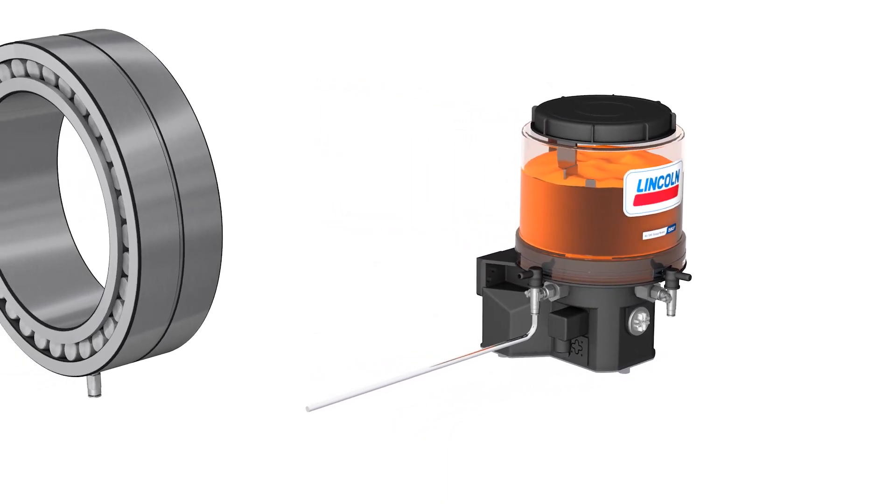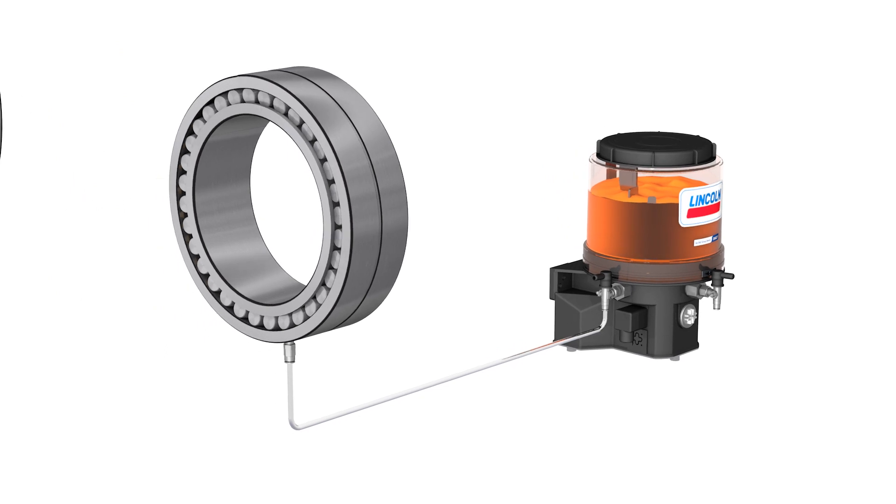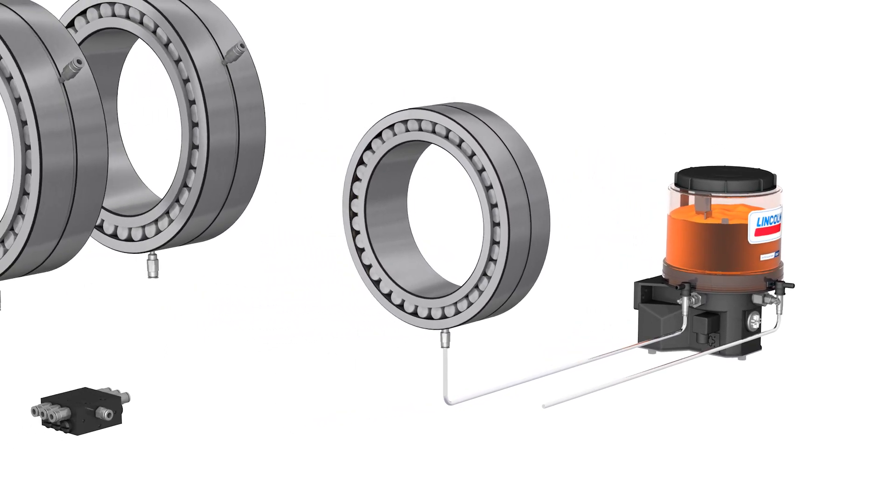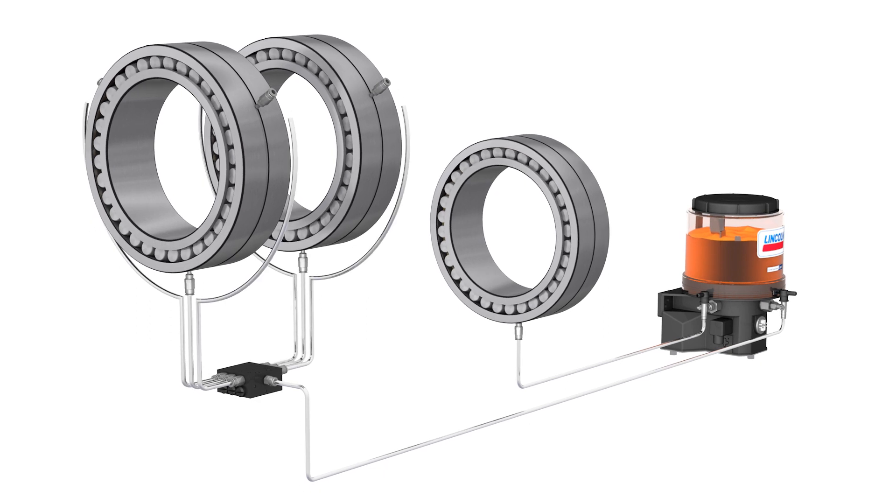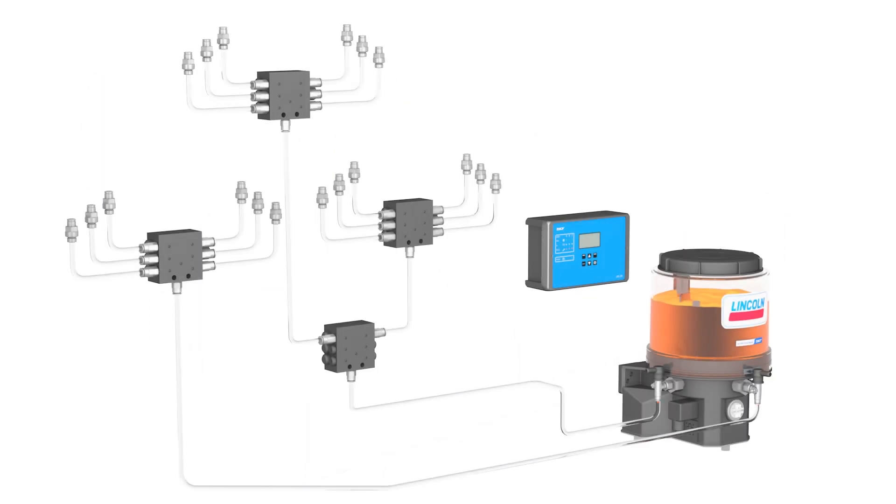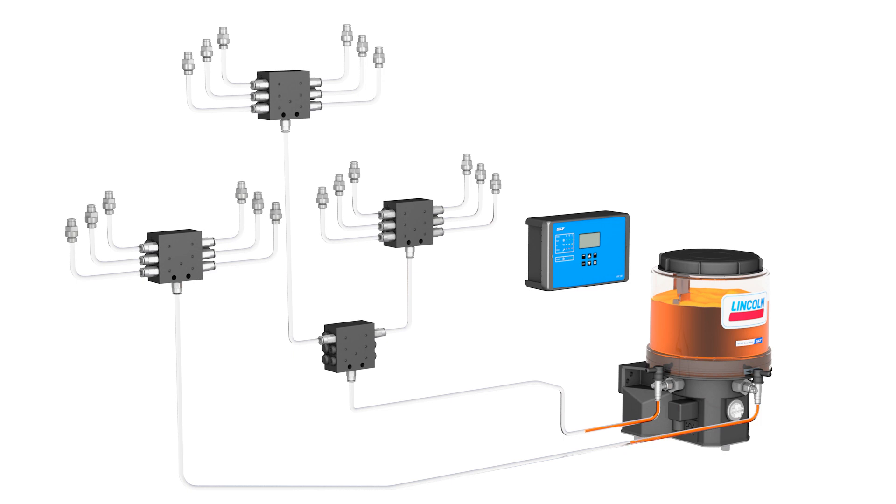Regardless of the application, the principle of progressive lubrication remains the same. A central pump unit automatically delivers lubricant through one or several supply lines to the lubrication points, either directly or via metering devices.